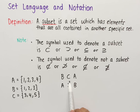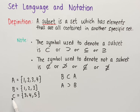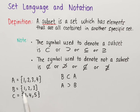Looking at set C — which contains 3, 4, and 5 — and comparing it to set A, we see that 3 is in both set A and set C, and 4 is also in both set A and C. However, 5 is in set C but it is not in set A.